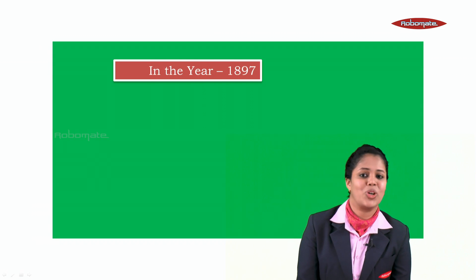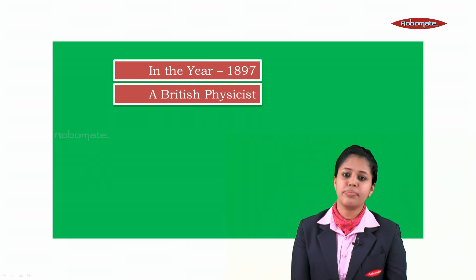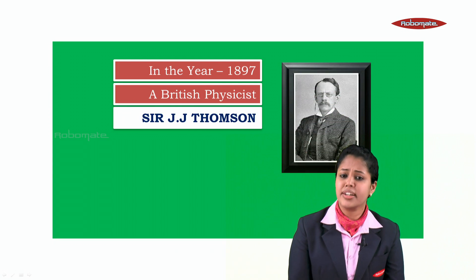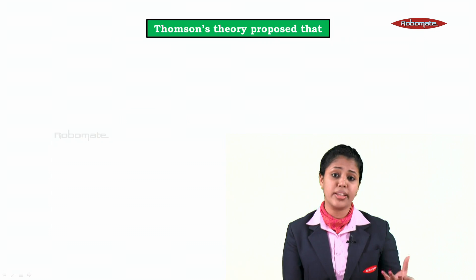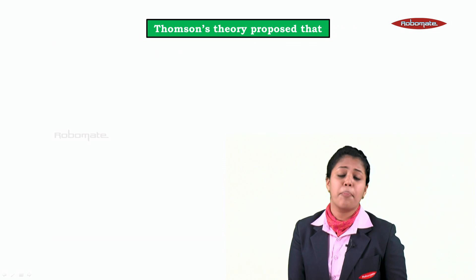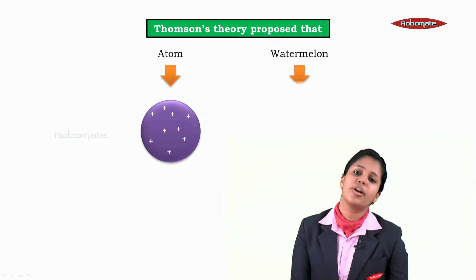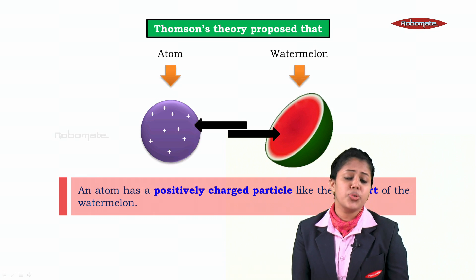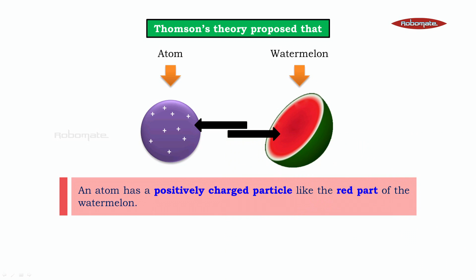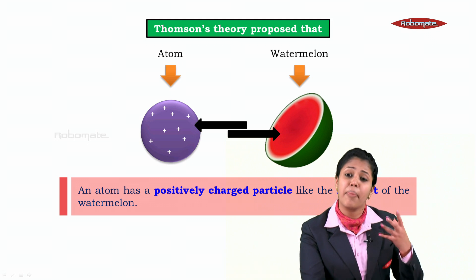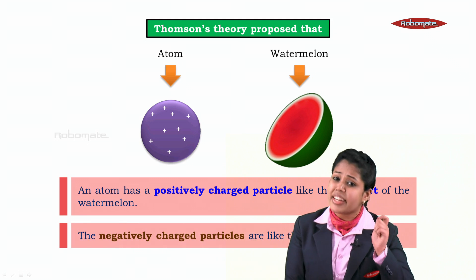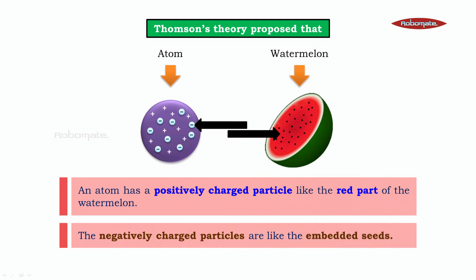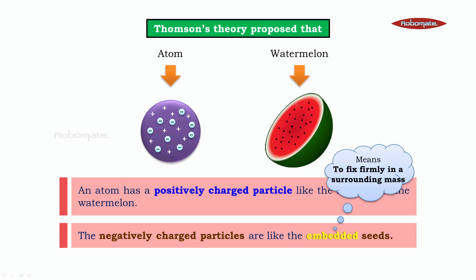In the year 1897, a British physicist Sir J.J. Thompson compared an atom to a watermelon. Thompson's theory proposed that an atom is like a watermelon. According to Thompson, an atom has positively charged particles like the red edible part of the watermelon — the red part that we eat — he compared it with the positively charged particles of an atom. The negatively charged particles of an atom are like the embedded seeds.